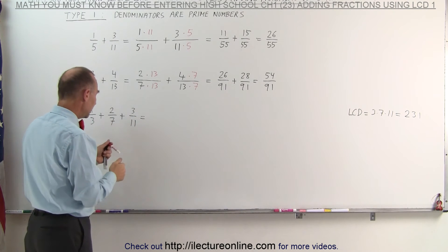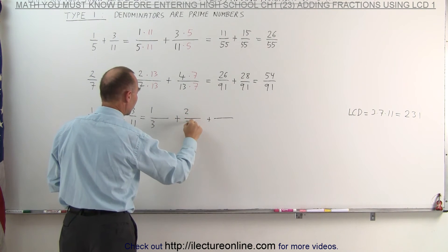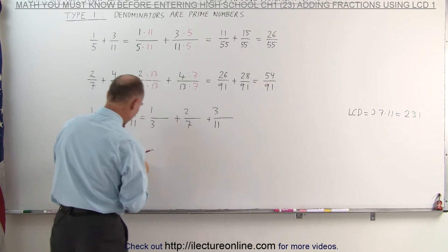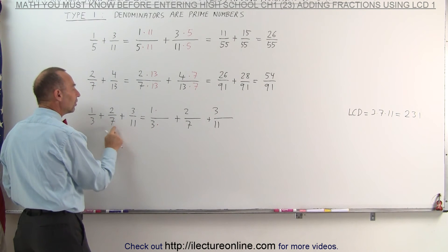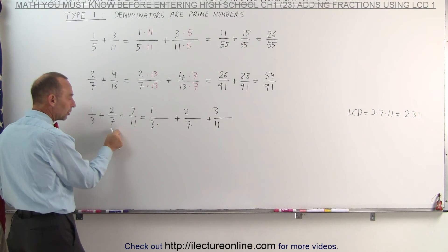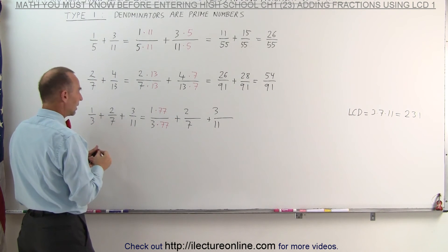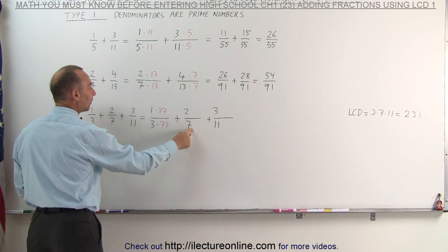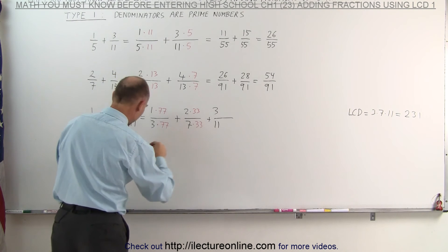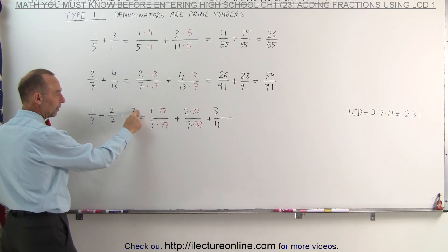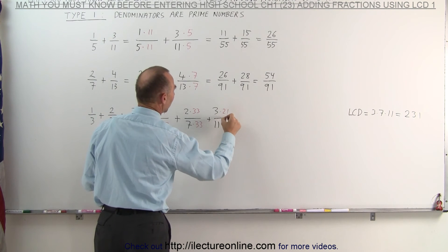To find the equivalent fractions, we take each of the three fractions and multiply both the numerator and the denominator by a specific value. For the first fraction, we multiply by the product of the two other denominators — 7 times 11, which is 77. For the second fraction, we multiply the numerator and the denominator by the product of the other two denominators, which is 3 times 11, which is 33. And finally, the third fraction — we multiply both the numerator and the denominator by 3 times 7, which is 21.